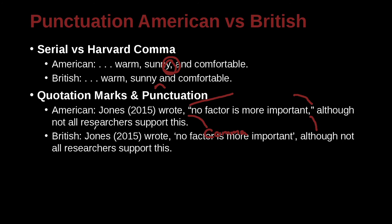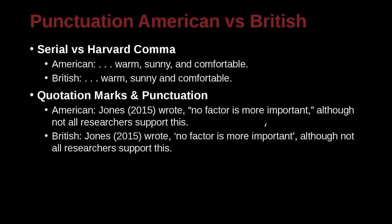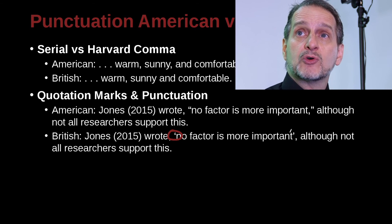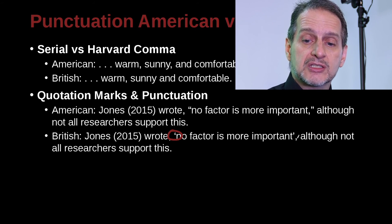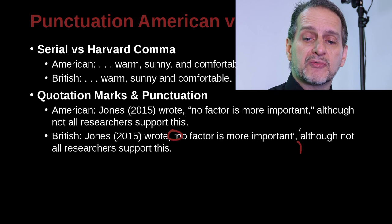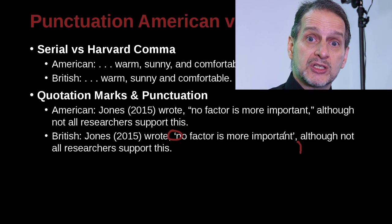Here's the British approach. It would be: Jones 2015, 'No factor is more important', although not all researchers support this. There are a couple of differences from the American approach. First, British style uses single quotation marks rather than double quotation marks. Second, the comma is placed on the outside of the single quotation mark. No space before the comma, one space after. That is really the difference between the American and British approaches.